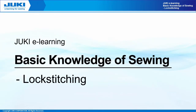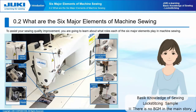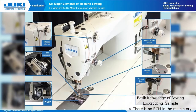Juki e-learning: Basic Knowledge of Sewing — Lock Stitching Introduction. Six major elements of machine sewing. Sewing machines that make lock stitches are comprised of six major mechanisms, called the six major elements of machine sewing, referring to the needle bar, hook, thread take-up, feed, presser foot, and thread tension. These elements are essential for the basic performance of a sewing machine, which uses a needle and thread to sew multiple pieces of fabric together.